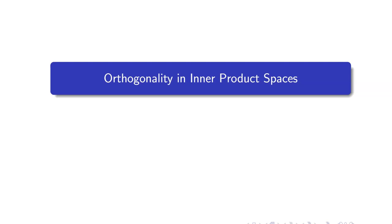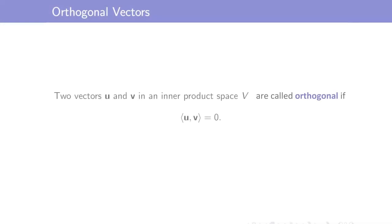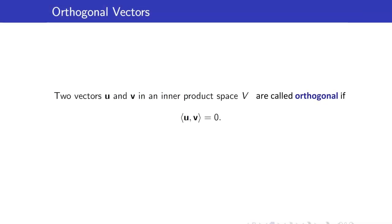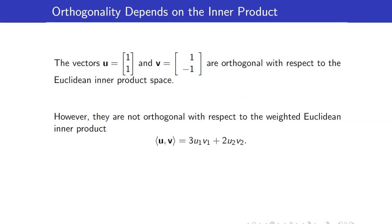In this lesson, I am going to discuss orthogonality in inner product spaces. Let us recall that two vectors u and v in an inner product space are called orthogonal if their inner product is equal to zero.